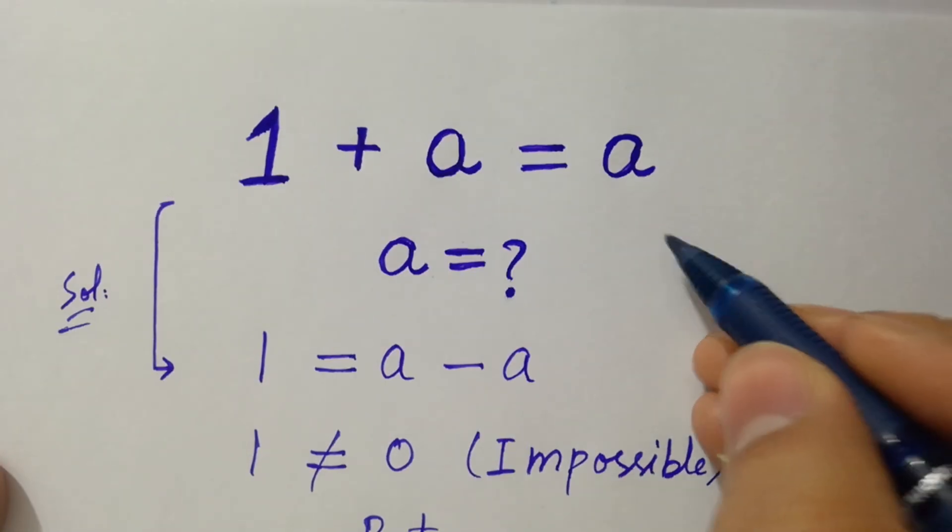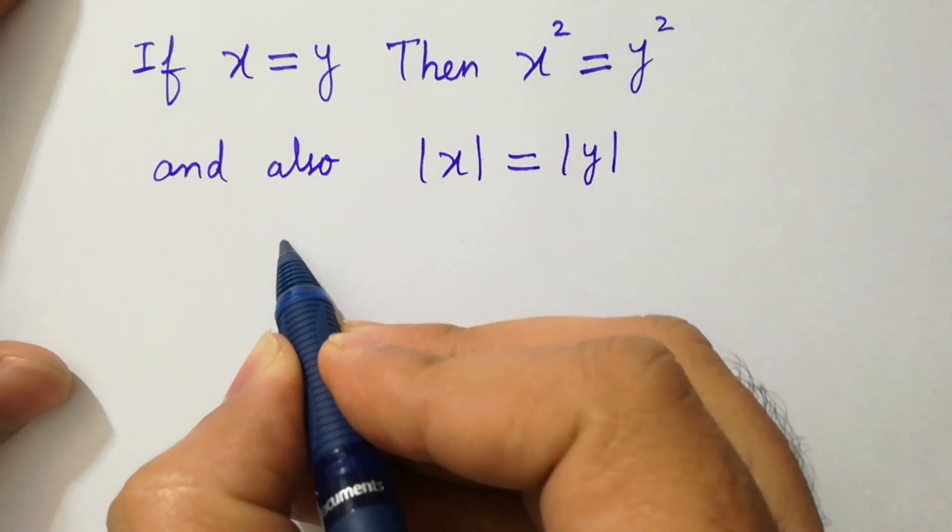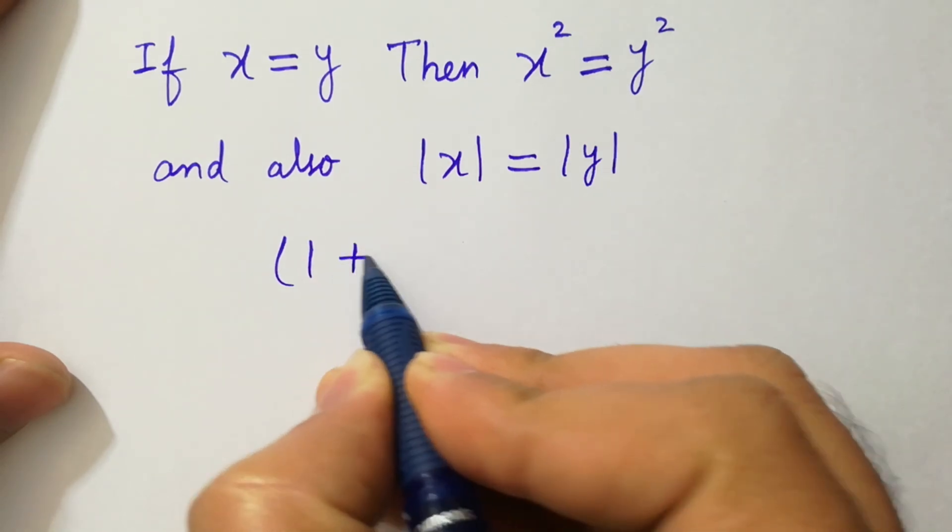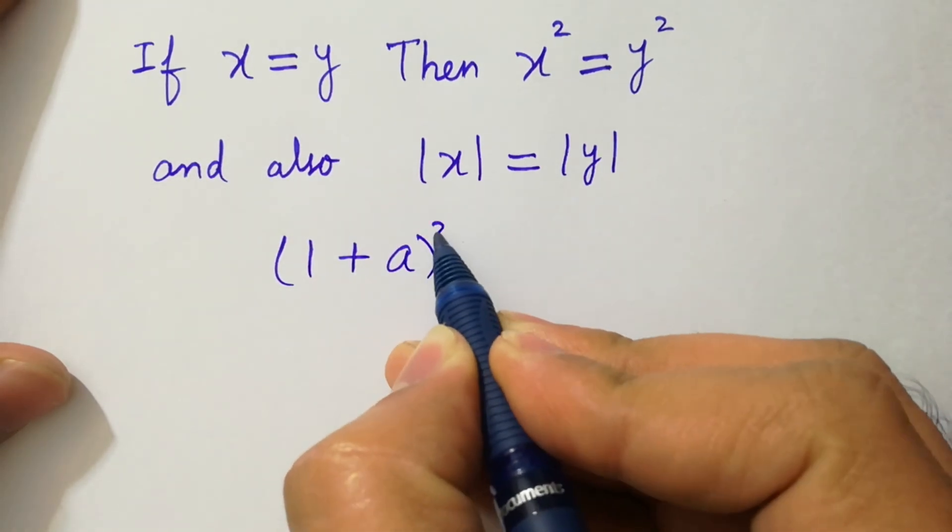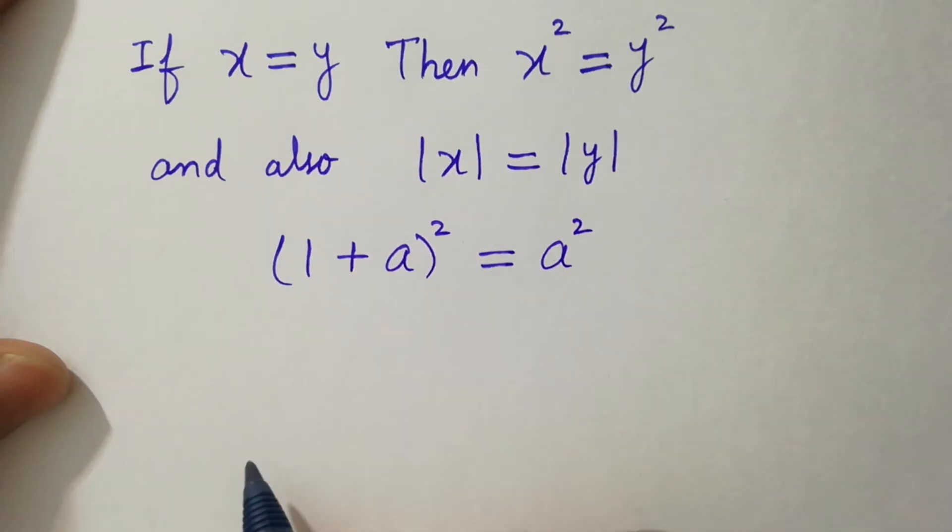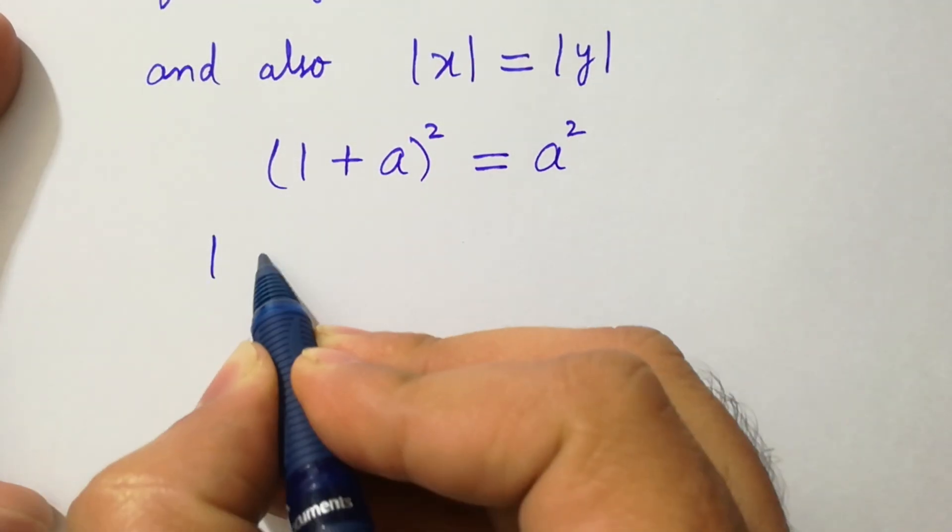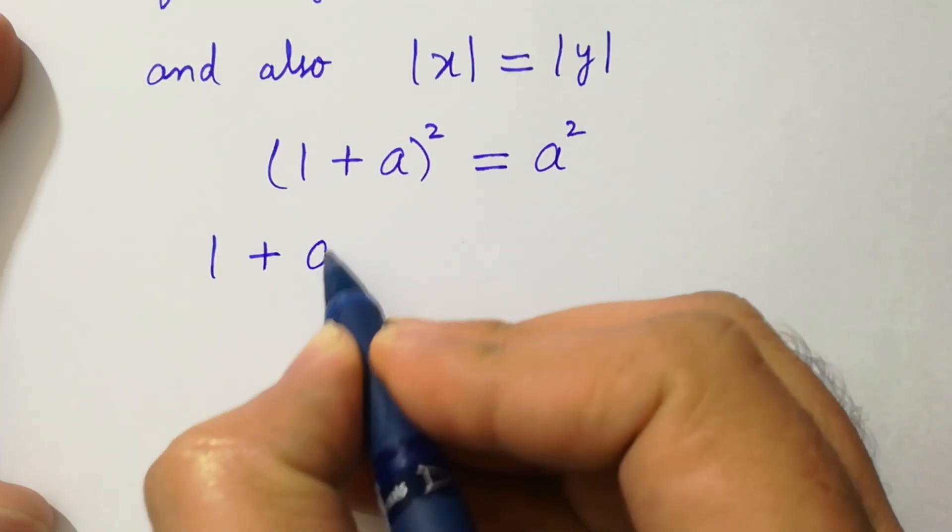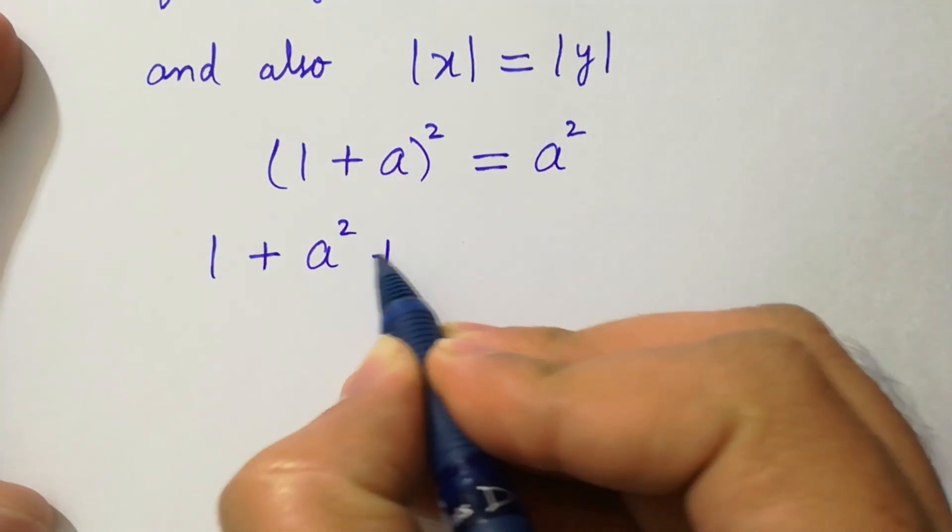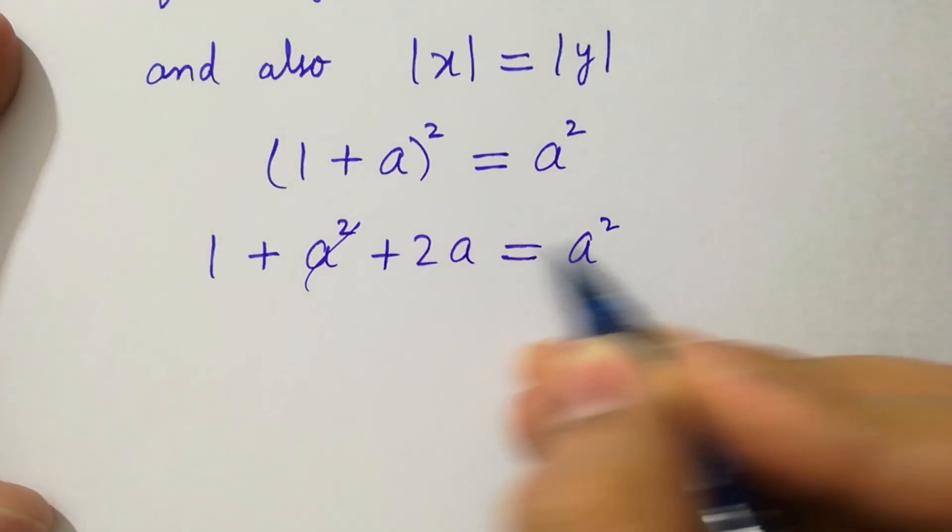Then we should take square on both sides. 1 plus a squared equals a squared. Apply formula: we have 1 squared is 1 plus a squared plus 2a equals a squared.